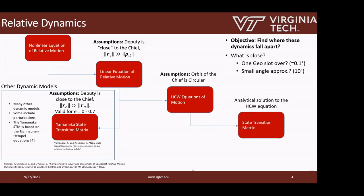When we talk about something like GEO, where the radius of the chief is 42,000 kilometers, what does 'close' mean? How close do you have to be for these dynamics to hold up? What we'll find is that we don't actually have to be very close to the chief — we just have to be close to the chief's orbit, which is a big change in that assumption. Similarly, we want to figure out how to use the HCW equations when the chief has some eccentricity, and we'll show how to do that.